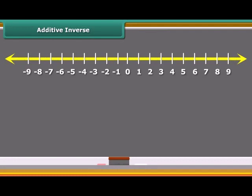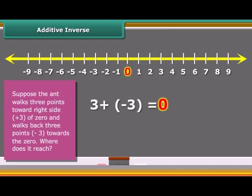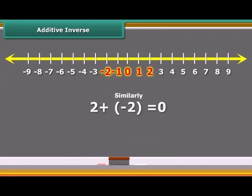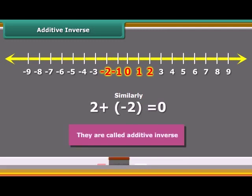Now we will learn additive inverse. Suppose the ant walks three points from zero to the right side and walks back three points. Where does it reach ultimately? You can see that it will reach to zero. If we add three and minus three, we obtain the sum as zero. Numbers such as three and minus three, two and minus two, when added to each other, give the sum zero. They are called additive inverse.